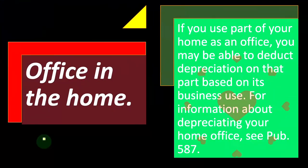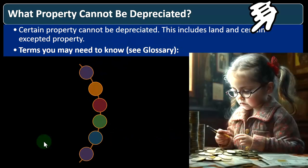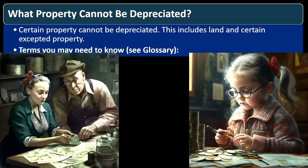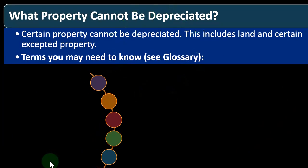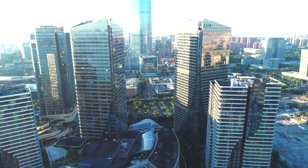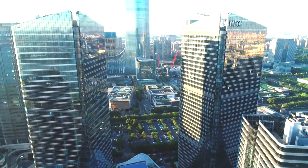For more information about depreciating your home office, see Publication 587. Now, what property cannot be depreciated? Certain property cannot be depreciated — this includes land and certain exempted property. When we think about things that are going to be depreciated, we put them on the books as an asset because they're long-lived items and we want to allocate the cost to the period it's consumed. However, land doesn't wear out the way a building does, or equipment, furniture, and so on.